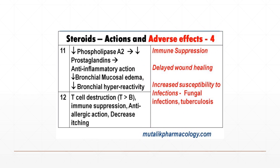Another very important adverse effect of glucocorticoids is immunosuppression. They suppress the immune system, delay wound healing, and increase susceptibility to fungal infections and tuberculosis in humans. The mechanism of immunosuppression includes inhibition of the phospholipase A2 enzyme, resulting in decreased prostaglandin synthesis. Glucocorticoids also promote T-cell destruction, inducing immune suppression, anti-allergic action, and decreased itching.